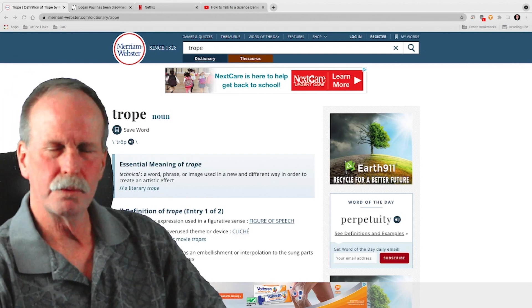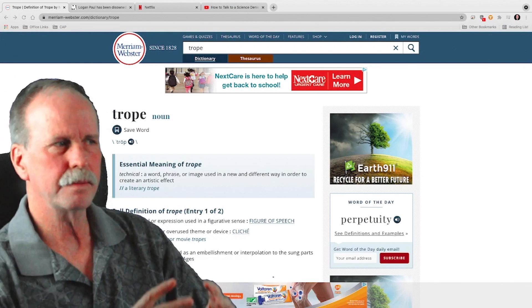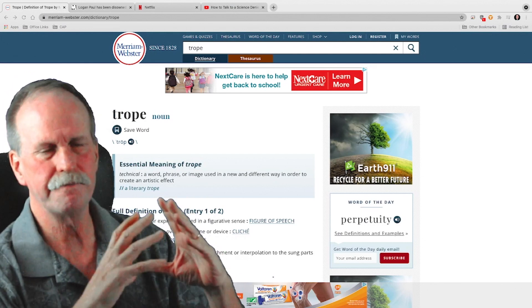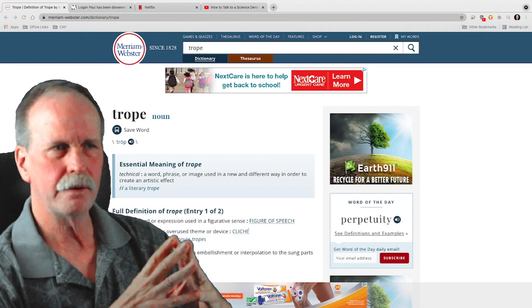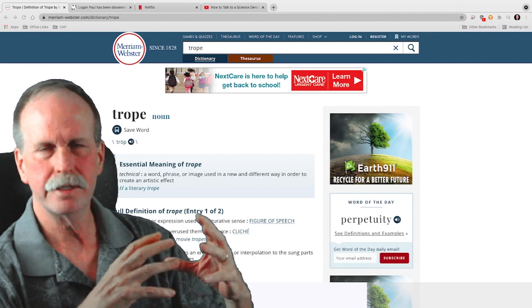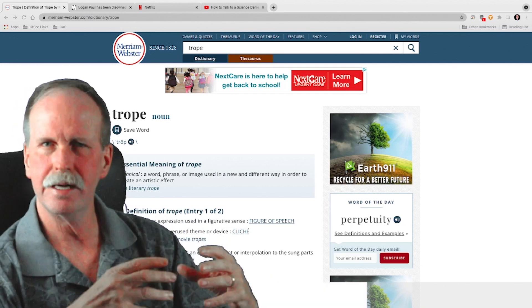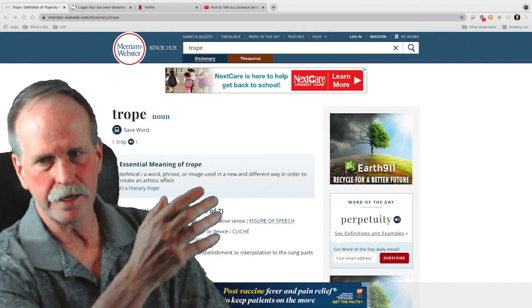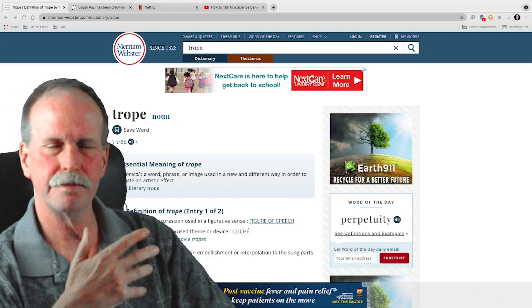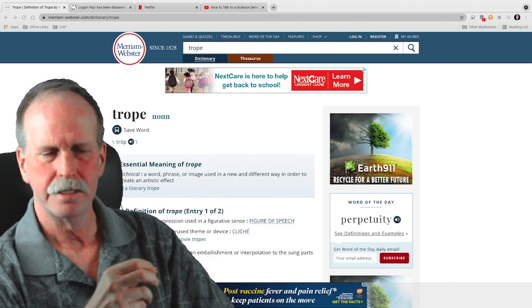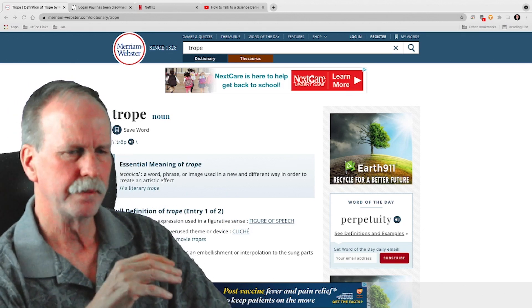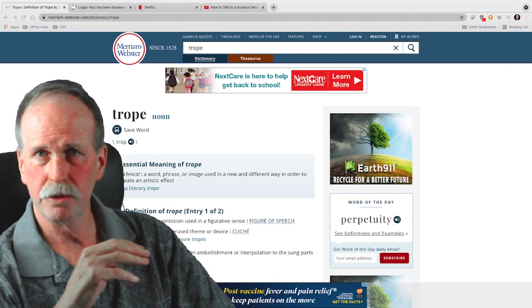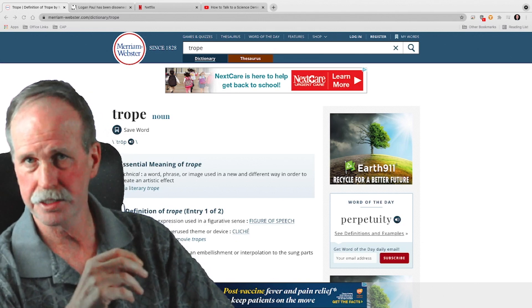Now, in our next episode, what I want to talk about is what Dr. McIntyre called the five tropes of science denial. Now, a trope is a literary mechanism, a party line, so to say. If you look at the definition of it here, it's an overused device or theme. Basically, this is the five themes of science denial. And let me just go over them real quick in preparation for our next episode.